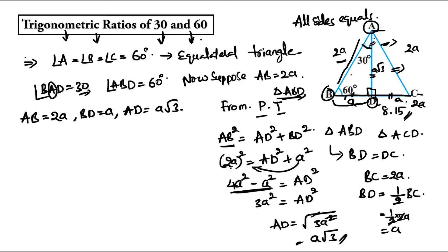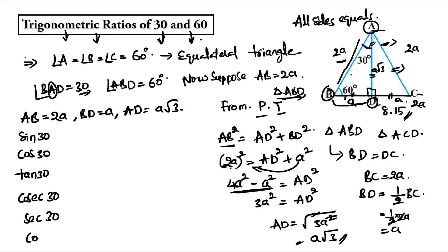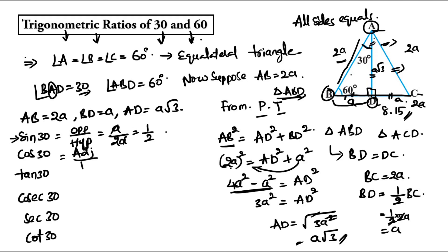Now we find the trigonometric ratios of 30°. For sine 30: in triangle ABD, opposite to 30° is BD = a, and hypotenuse is AB = 2a, so sin 30 = a/2a = 1/2. For cos 30: adjacent to angle A is AD = a√3, divided by hypotenuse 2a, so cos 30 = a√3 / 2a = √3/2.